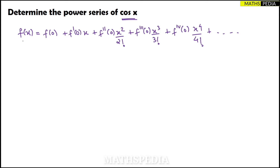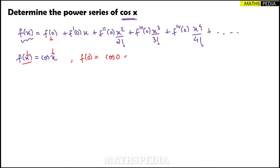The function f(x) is given as cos x. Now we find each term. First, f(0) means substituting x = 0 into cos x, giving cos(0), which equals 1.